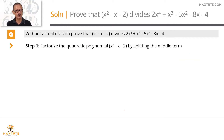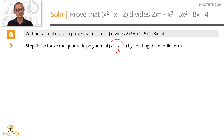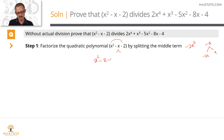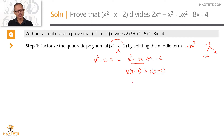Start with step 1: factorizing the quadratic expression by splitting the middle term. The middle term is minus x. We break it into two parts whose sum is minus x and whose product equals the product of the first and last term, which is minus 2x squared. It breaks up as minus 2x and plus x — sum is minus x, product is minus 2x squared. So x squared minus x minus 2 factorizes as x squared minus 2x plus x minus 2. Taking x common from the first two terms gives x times x minus 2. Taking 1 common from the last two terms also gives x minus 2. So x minus 2 is common, giving x minus 2 times x plus 1.